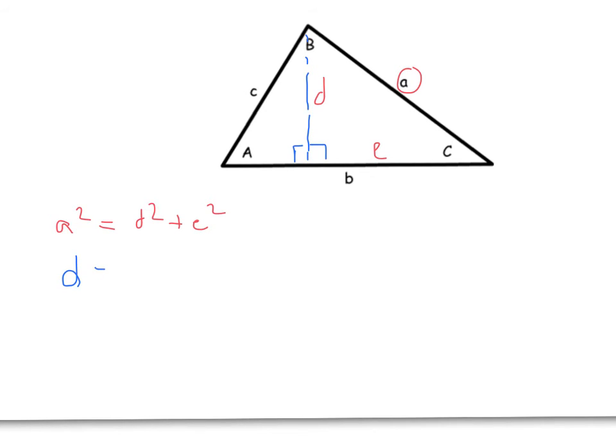We can calculate it using resolving. Because it's a right angle triangle, D equals C sine A - essentially the cosine of this angle is the same as the sine of this angle. We can also see that E is B minus this other part, which is C cos A.